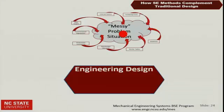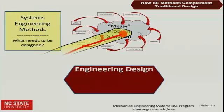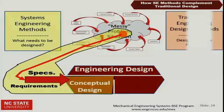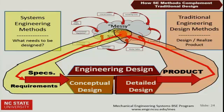Let me show you how this complement works. Systems engineering methods help you take that messy problem situation and truly understand what needs to be designed — performing conceptual design so you have a design that will meet the customer's needs. Traditional engineering design methods then allow you to perform detailed design to actually realize a product that will go back and satisfy those customer's needs. The two complement each other — they're a team, working together whatever kind of engineering discipline you're in.